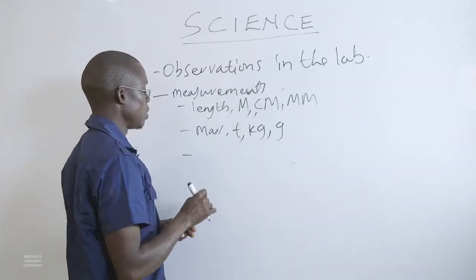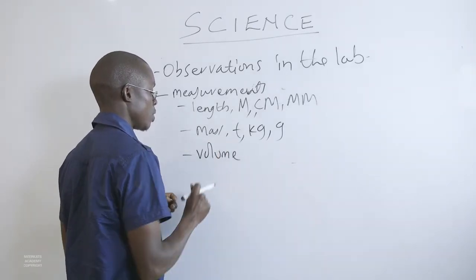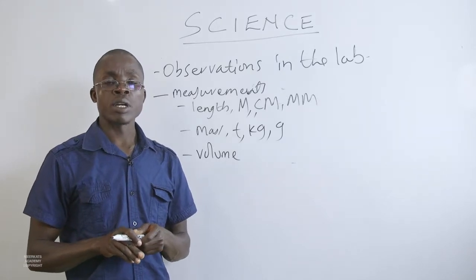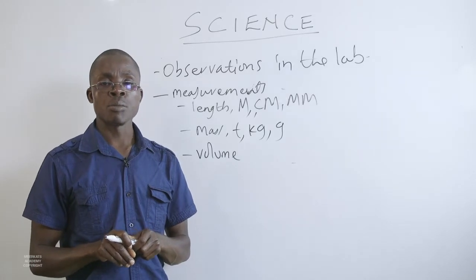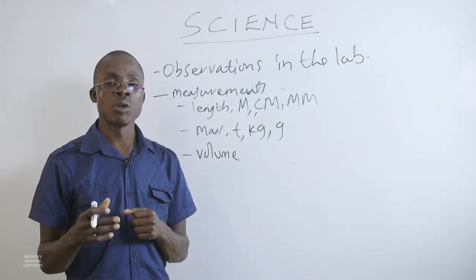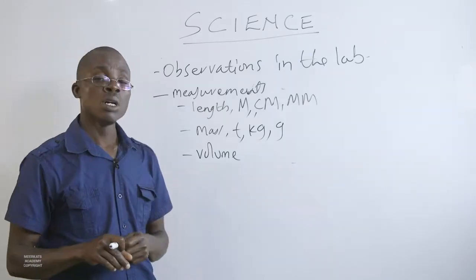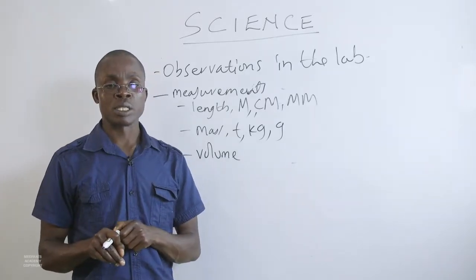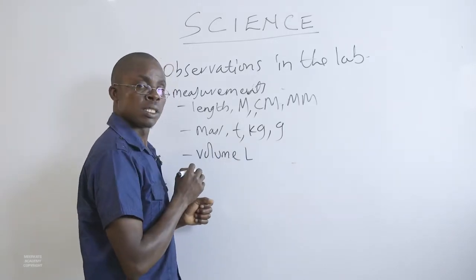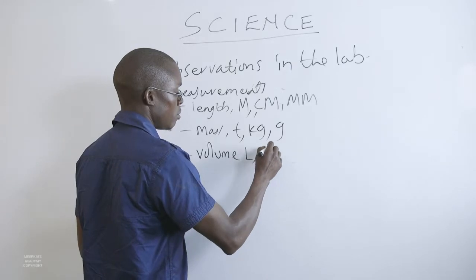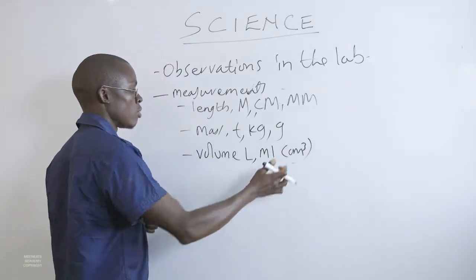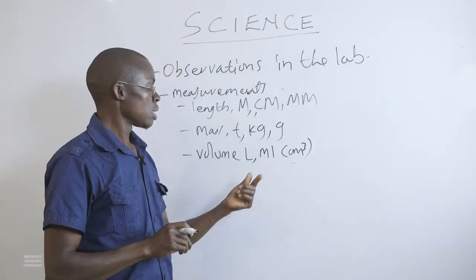Another measurement unit is volume. Volume is commonly to do with substances in liquid or gaseous state. Measuring volume of gases requires very special apparatus, but for liquids it is straightforward using common lab apparatus. Measurement of volume is normally done in liters or in milliliters — which is also called centimeter cubed or cubic centimeter. You will find that in some cases cubic centimeters and milliliters are used interchangeably.